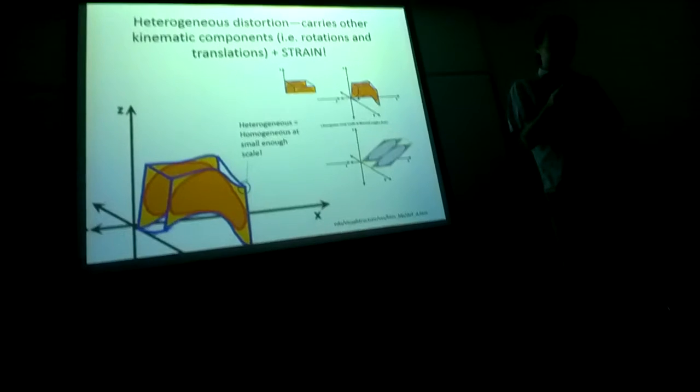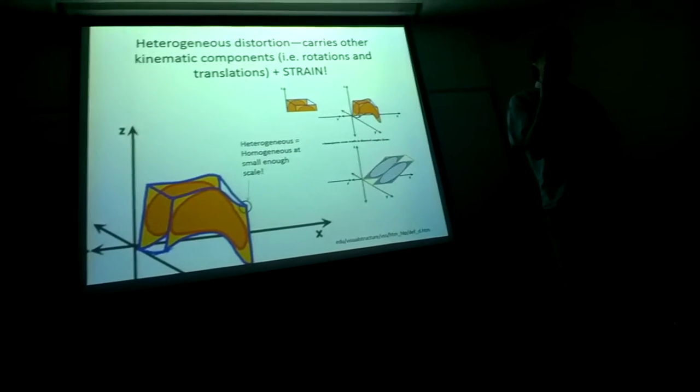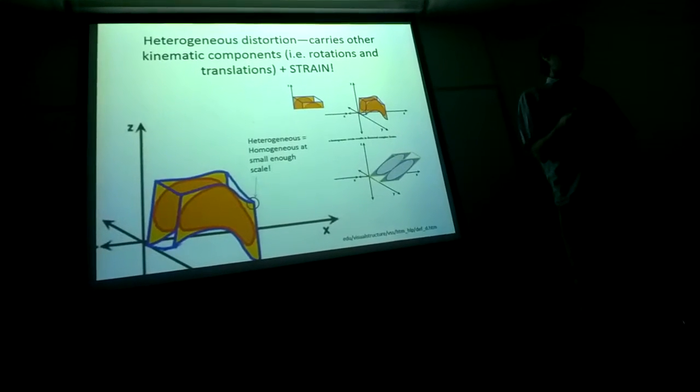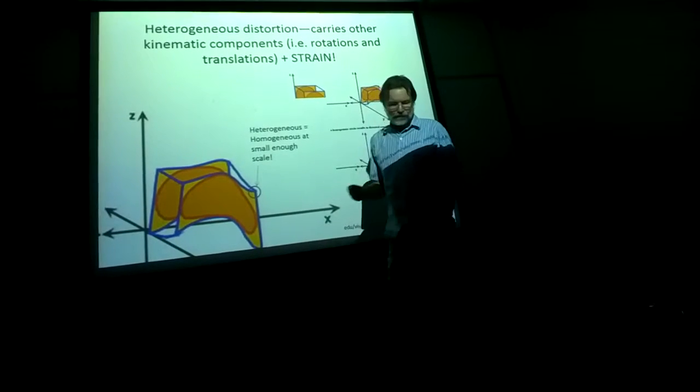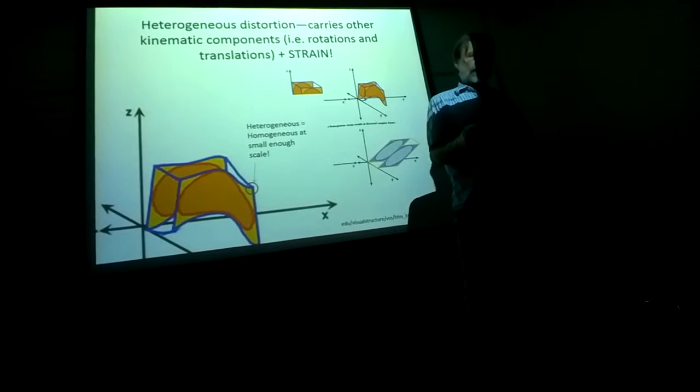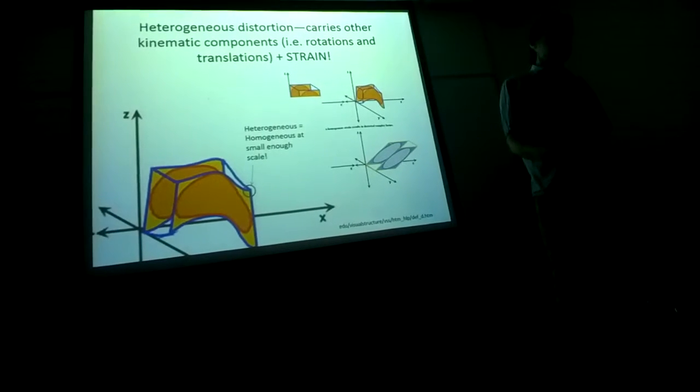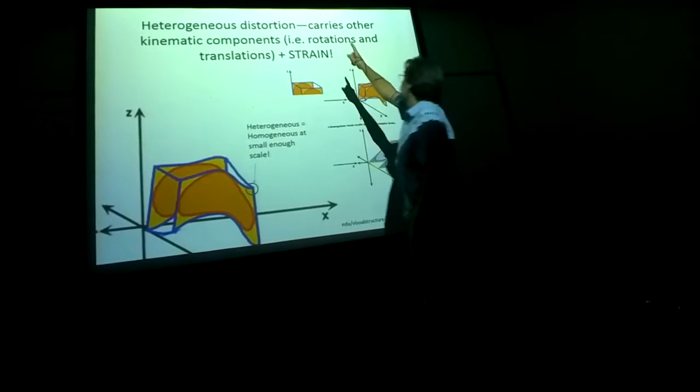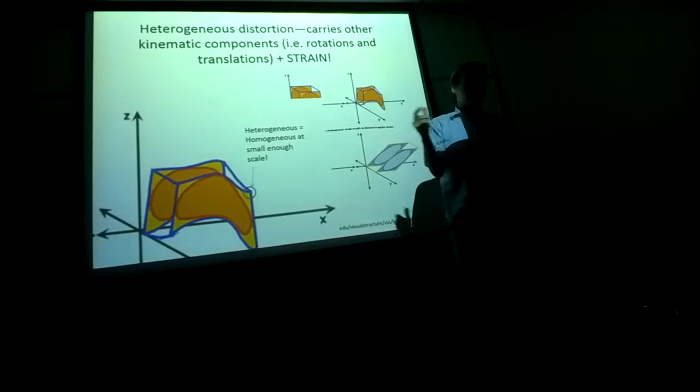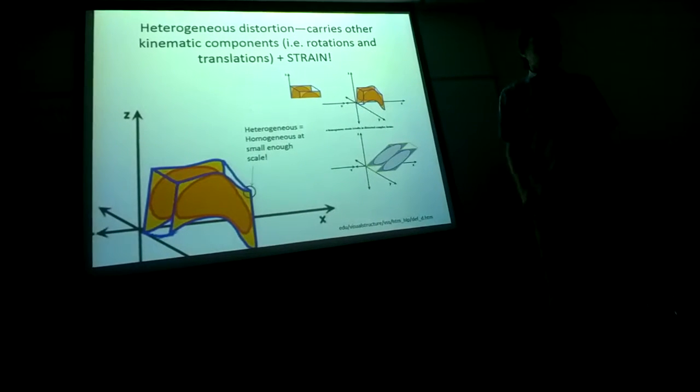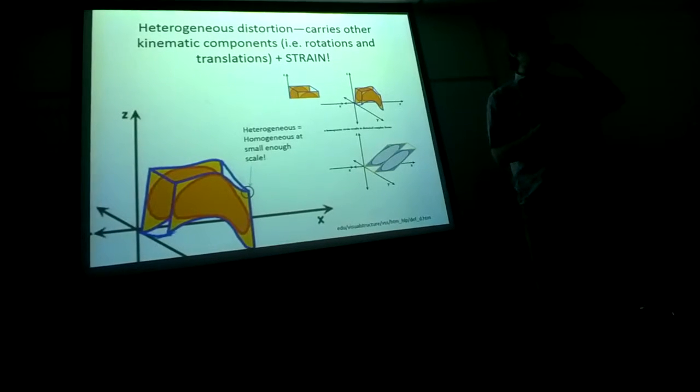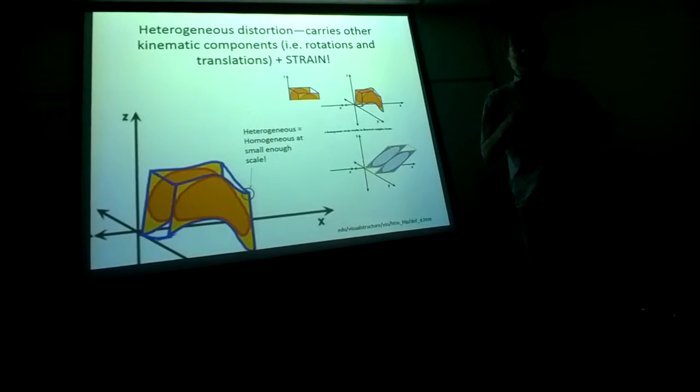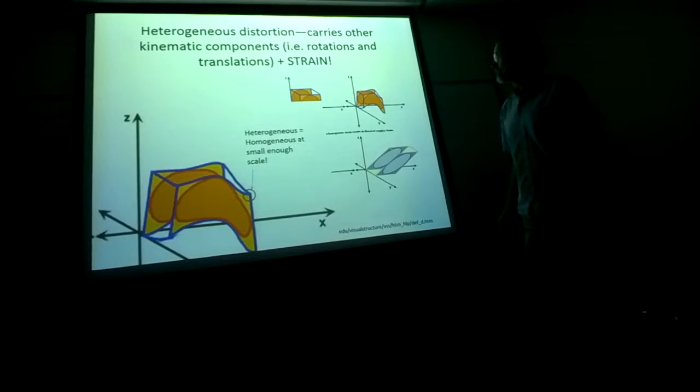So a general description of kinematics carries all three, such that the strain, and one way to think of it, I always tell people, is the strain is the leftover component of the displacement field after you remove the rotation and the translation. That's the localized distortions or the localized vector field that describe the motions at that scale once you remove those two different components.